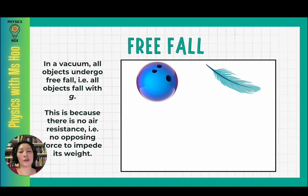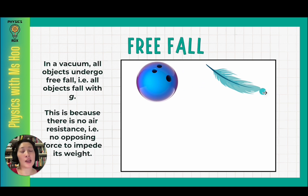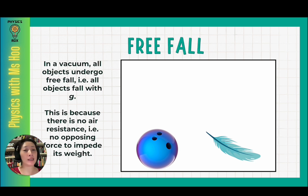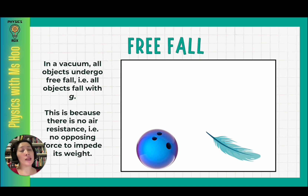The reason objects fall with G in a vacuum is because there is no air resistance — no opposing force to impede their weight. So regardless of the mass, for example comparing a bowling ball and a feather dropped in a vacuum with absolutely no air resistance, the only force pulling the objects down is their individual weight, so both fall at the same rate. There is an excellent BBC video on YouTube featuring Brian Cox, who visited a huge vacuum chamber and compared bowling balls and feathers first in air and then in vacuum — do check out the link in the description below.